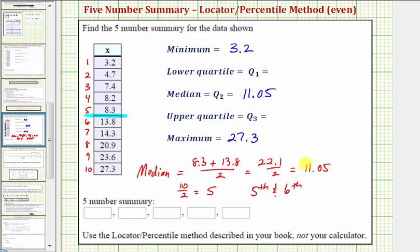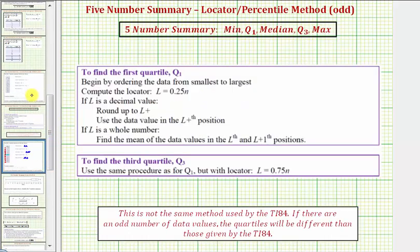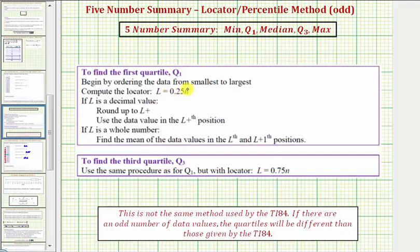Now let's find Q1 and Q3 using the locator percentile method. The data must be in order from least to greatest. To find Q1, we use the locator formula L equals zero point two five times n, where n is the number of data values. If L is a decimal, we round L up to the next whole number and use that position as Q1. If L is a whole number, we find the mean of the data values in the Lth and L plus one positions. We find Q3 the same way, except we use the formula L equals zero point seven five times n.